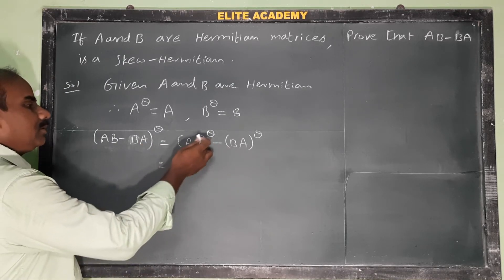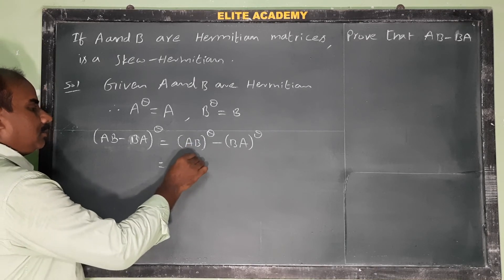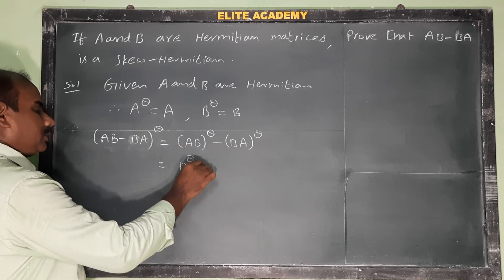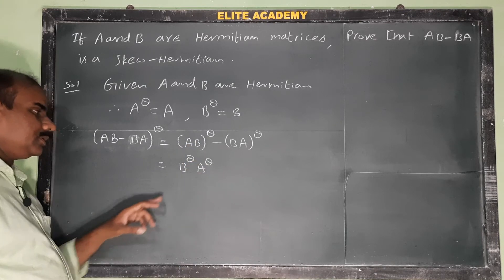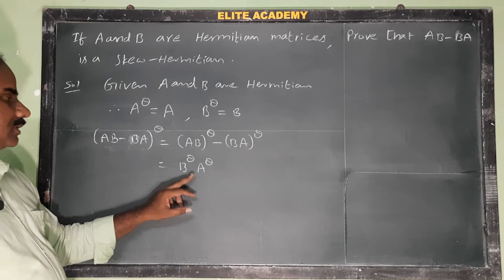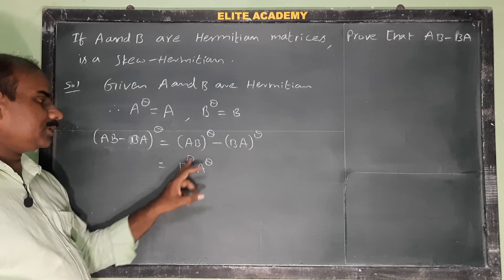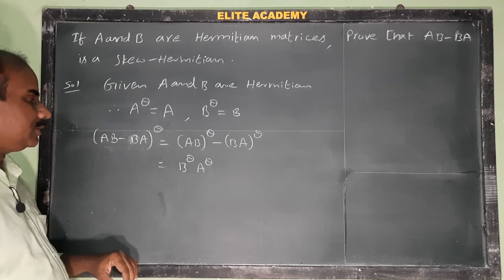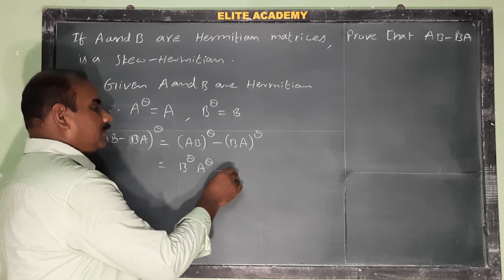Using the properties of the Hermitian matrix, (AB)† equals B†A† and (BA)† equals A†B†.